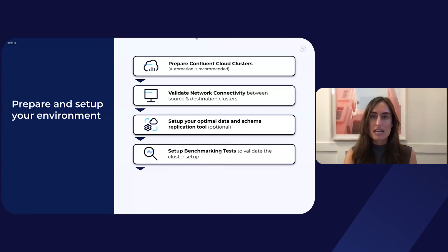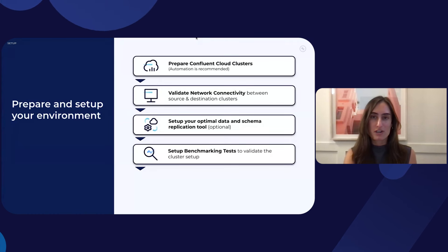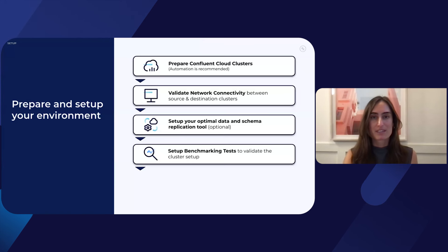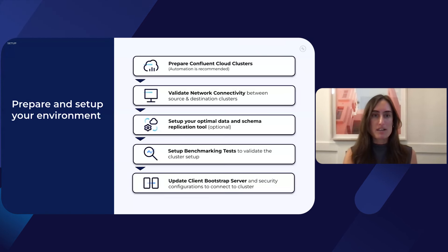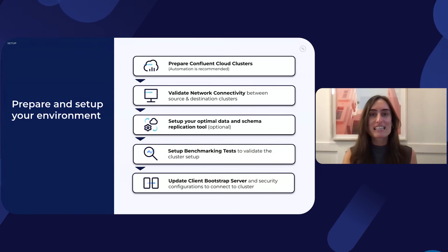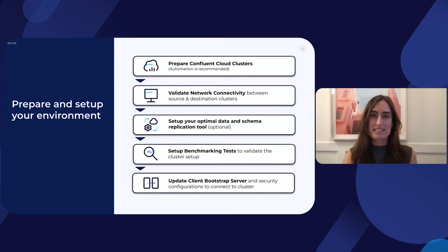Once the cluster is set up, perform benchmarking tests to validate your use case on the cluster. This will help you confirm Confluent Cloud and your clients are correctly configured for your use case. Finally, prepare the automation for updating the bootstrap server and security configurations for the clients. The specifics of how this is done will vary depending on how your clients are deployed and the security configurations you've chosen. For information on how to update these, check out the white paper for detailed instructions.